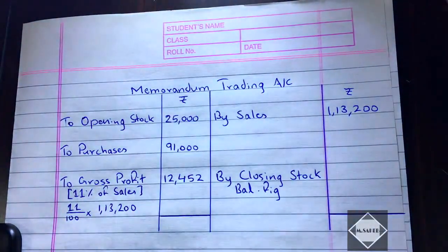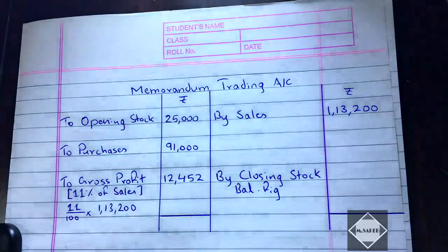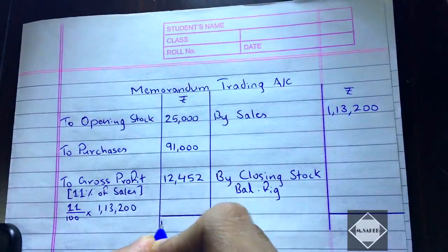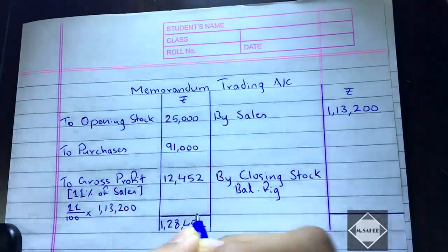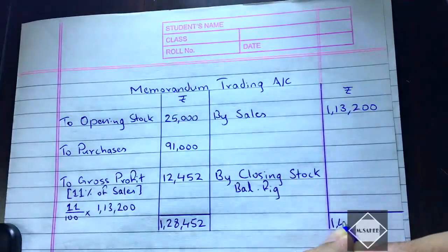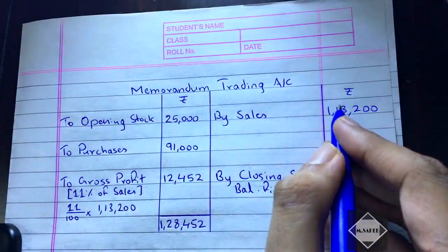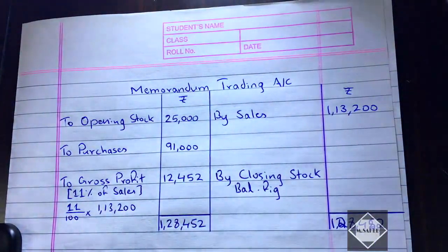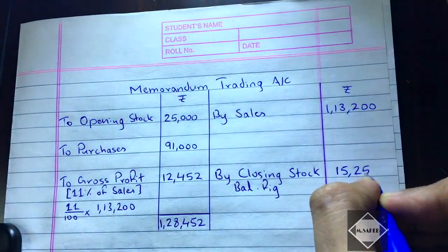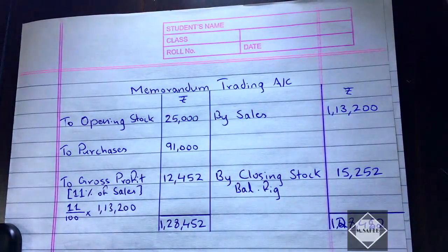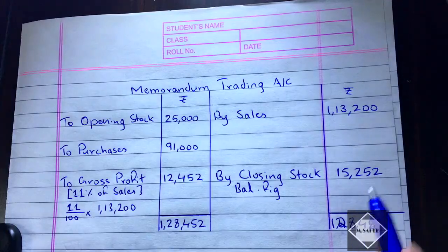The closing stock is the balancing figure. The debit side total is 25,000 + 91,000 + 12,452 = 1,28,452, written on both sides. So closing stock = 1,28,452 − 1,13,200 = 15,252. We have found the closing stock as 15,252.